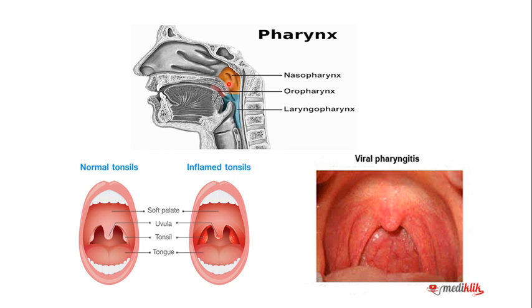Looking at this diagram, you can see the pharynx. This part is known as the nasopharynx, this is the oropharynx, and these are the laryngopharynx. They have different functions, but the back of the throat is called the pharynx.